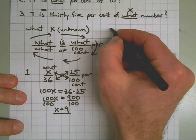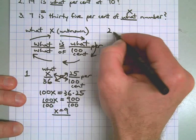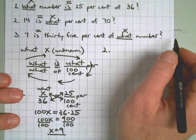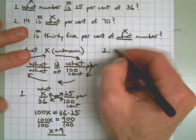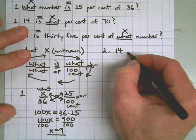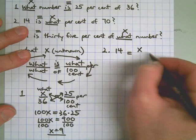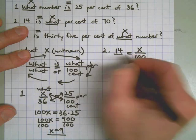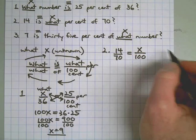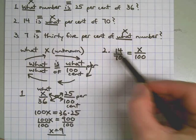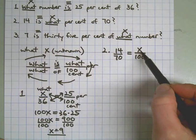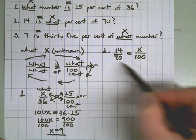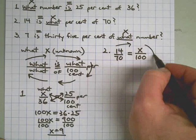Let's do number 2. The question is, 14 is what percent of 70? There's the correct set up. The word what was in the middle of this question. So therefore, it's in the middle of our circle. Remember, our circle goes around this way.